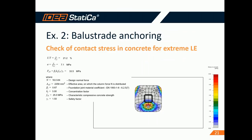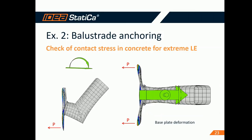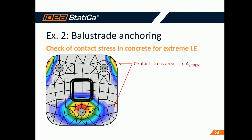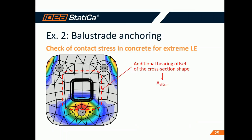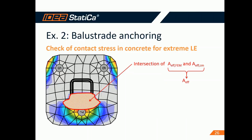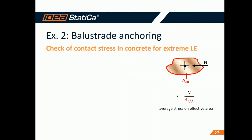Let's talk about the check of contact stress in concrete. We have many questions about the effective area — this value is crucial for the code check. Starting from the beginning: the connection is loaded and deformed; some parts of the base plate are pressed to the concrete foundation block. The contact stress area is determined, then the additional bearing offset of the cross-section shape is added, and the area is determined. Finally, the intersection of areas is determined — this is the effective area.